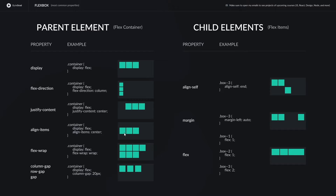Let's say we have seven flex items. When we set `display: flex`, the default behavior is that they all sit on the same row. Items four through seven will simply flow outside the container. If we don't want that and we want them to wrap onto a new line, we have to explicitly set `flex-wrap: wrap`. Then the browser lays them out and, when there's no more room, moves the next item onto a new line and continues.